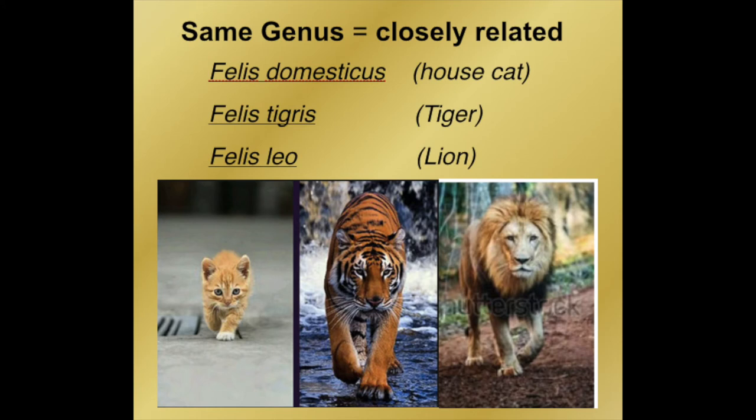A cool thing about the genus — the first part of the name — is that if you share the same genus with any other organism, it means you are very, very closely related. We see that with the house cat, Felis domesticus; the tiger, Felis tigris; and the lion, Felis leo. These are all very different organisms, but they all share a very close common ancestor, and we know that because their genus is all Felis. You can determine relatedness by the genus.